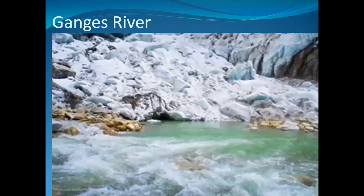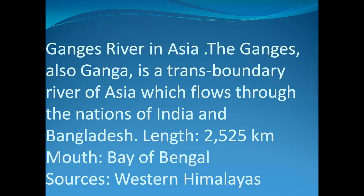River Ganges — the source of river Ganges is called Gomukh, named so because it is in the shape of a cow's mouth. The Ganges, also called Ganga, is a trans-boundary river of Asia which flows through the nations of India and Bangladesh. It is called trans-boundary because the water is shared between these two countries.